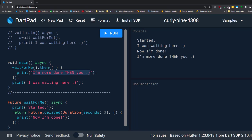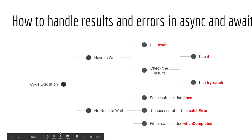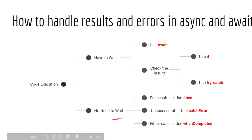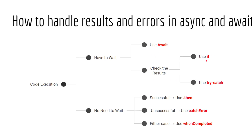So as you can see, we can use await or we can use .then. It's a bit confusing when to use which one, so I prepared this diagram. When you have a code execution, you either have to wait or you don't need to wait. For example, if you need to verify a user's status and then continue some operation, you cannot continue unless you verify the user — so in this case you have to wait. When you have to wait, you use the keyword await before the operation. When it is done, you can check the result using if to see whether it is successful, or you can use try and catch.